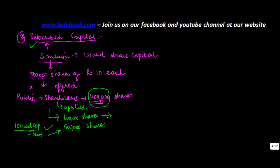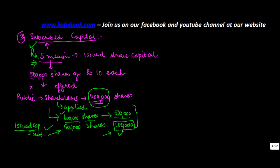Now what happens in case people apply for 600,000 shares? In that case the company will take up only 500,000 shares, because it had initially issued only 5 million worth of shares. So the issued capital will again be 500,000 shares. If you want to accommodate the additional shareholders, you can go through the entire procedures and issue these to the shareholders. But first it has to be issued and then only it can be subscribed.